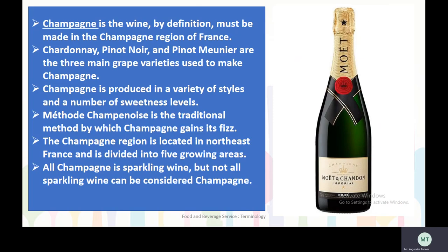Champagne is a wine that by definition must be made in the Champagne region of France. Chardonnay, Pinot Noir, and Pinot Meunier are the three main grape varieties used to make Champagne. Champagne is produced in a variety of styles and sweetness levels. The Champagne region is located in North East France and is divided into five growing areas. All Champagne is sparkling wine, but not all sparkling wine can be considered Champagne.